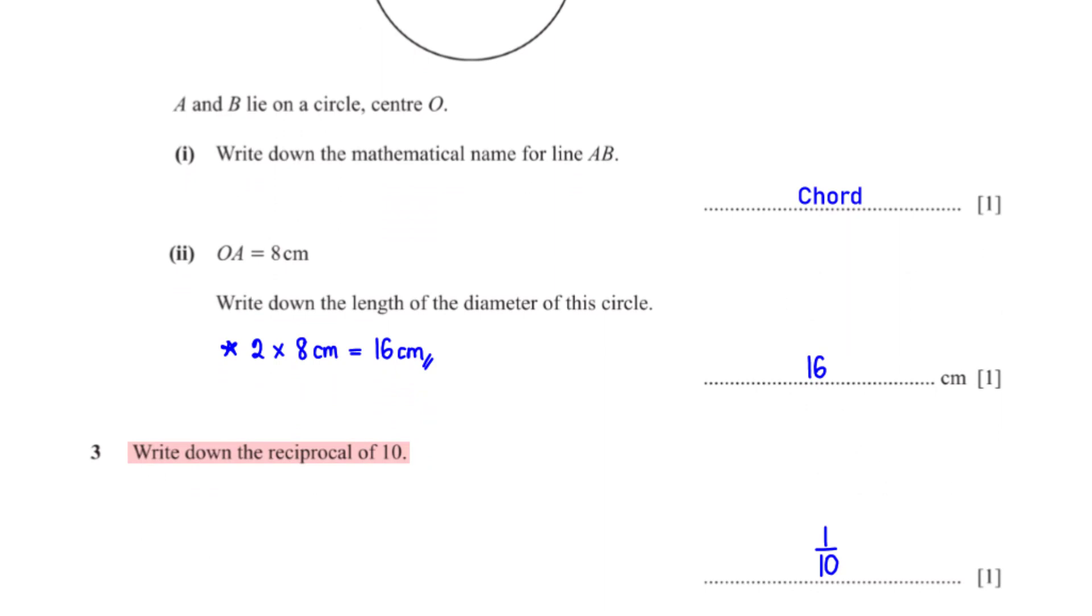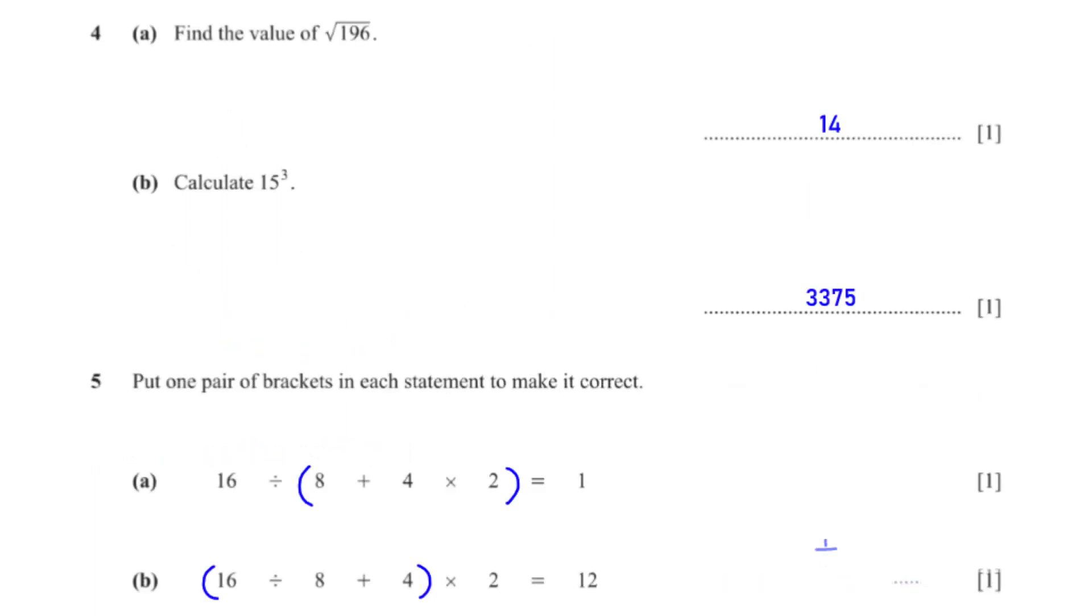Write down the reciprocal of 10. The reciprocal of any number is 1 over the number. So the reciprocal of 10 is 1 over 10. Find the value of square root of 196. When we type square root of 196 into the calculator, we get 14.